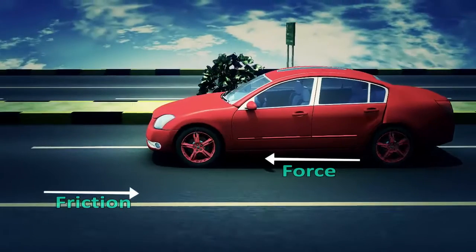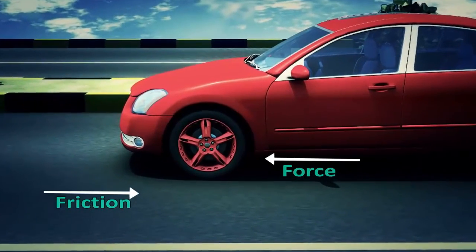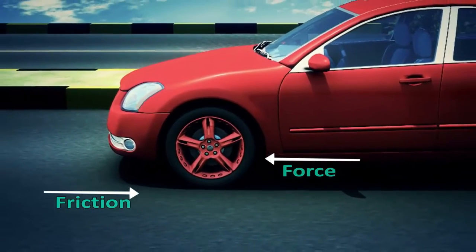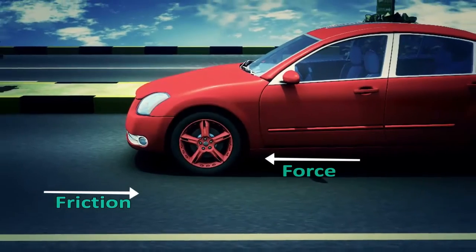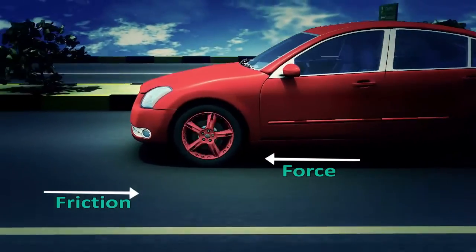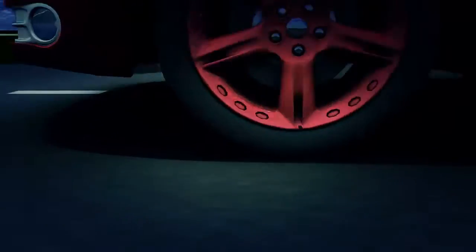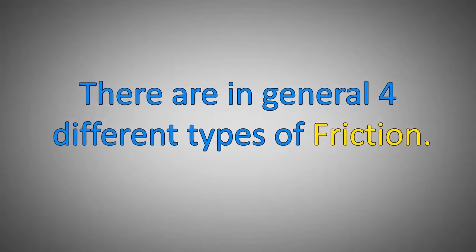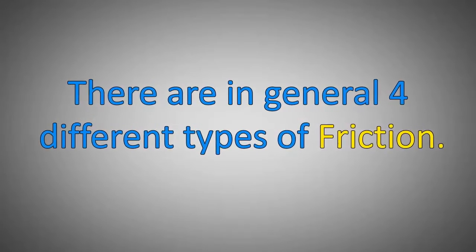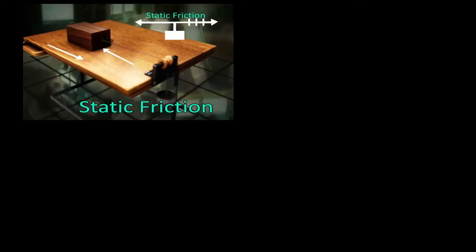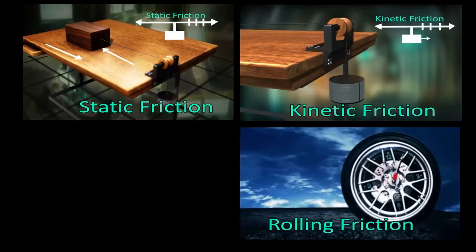Friction: when two surfaces in contact move relative to each other, then due to interlocking of surface irregularities, they have a tendency to oppose that motion. This is called friction. There are in general four different types of friction: static, kinetic, rolling, and fluid.